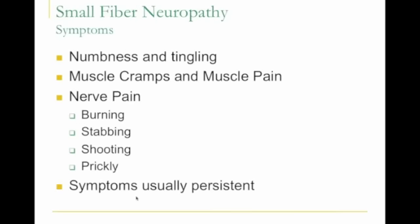If you have a small fiber neuropathy, the symptoms are related to damage to the small nerves. Because those nerves convey information about pain, symptoms include numbness, tingling, muscle cramps, and muscle pain — since small nerve fibers have been shown to be present in muscle. They don't cause true muscle weakness, but many people feel weak because their muscles are cramped or in pain. The most common symptom is nerve pain: burning, stabbing, shooting, or prickly sensations that are usually persistent but can come and go in different parts of the body.